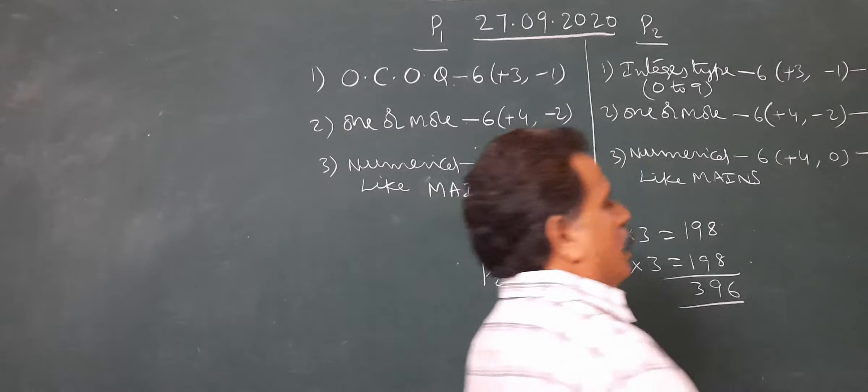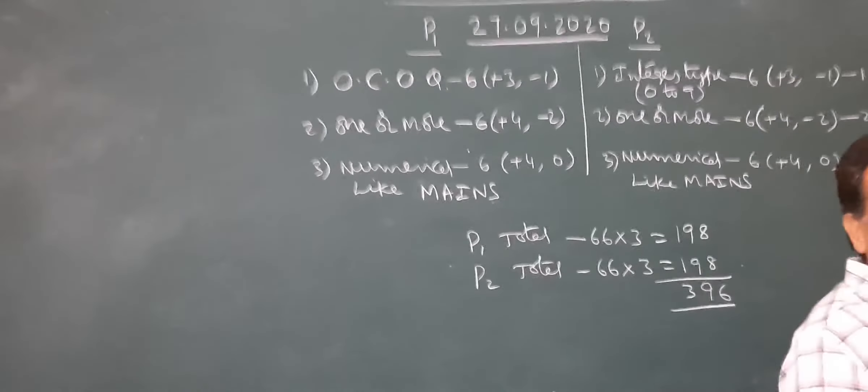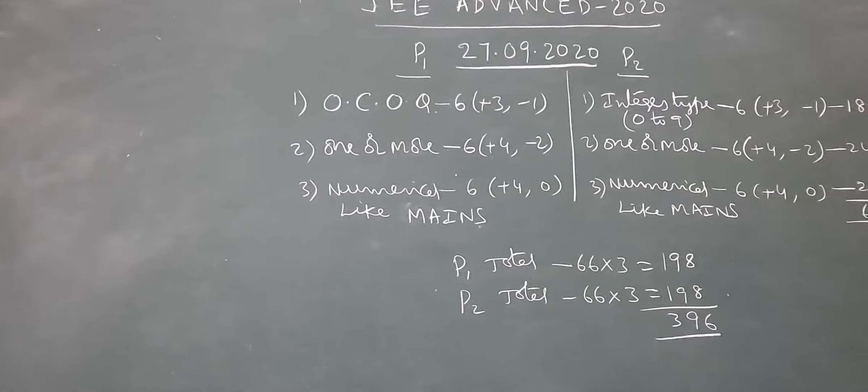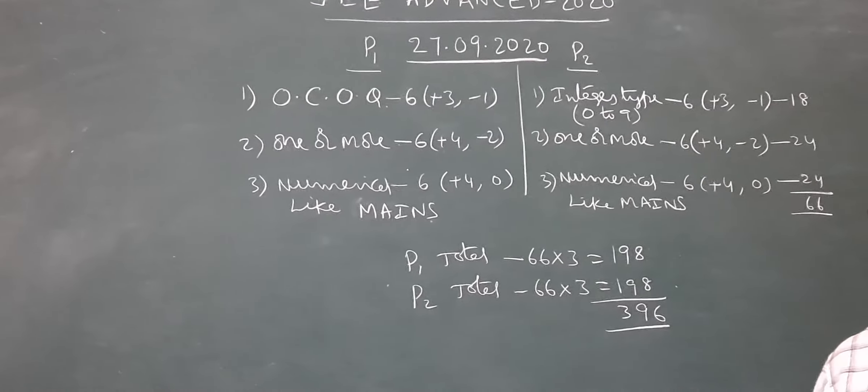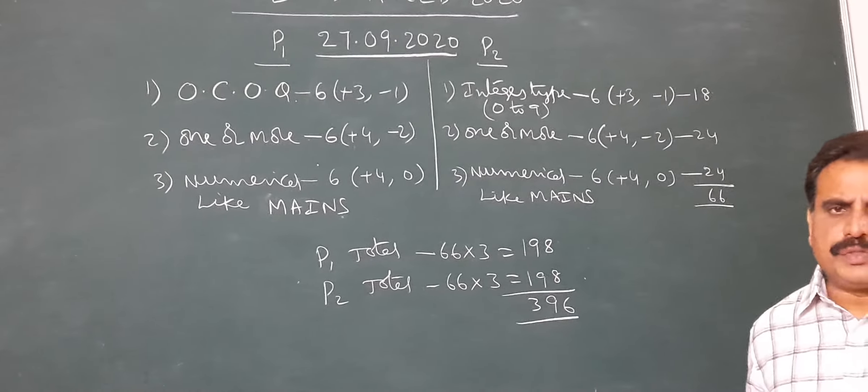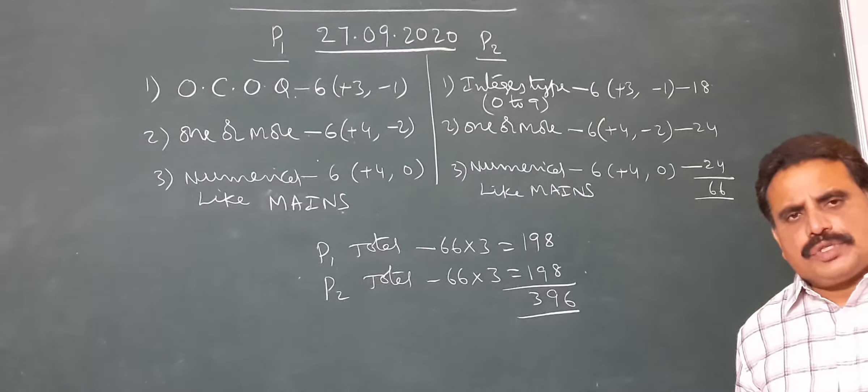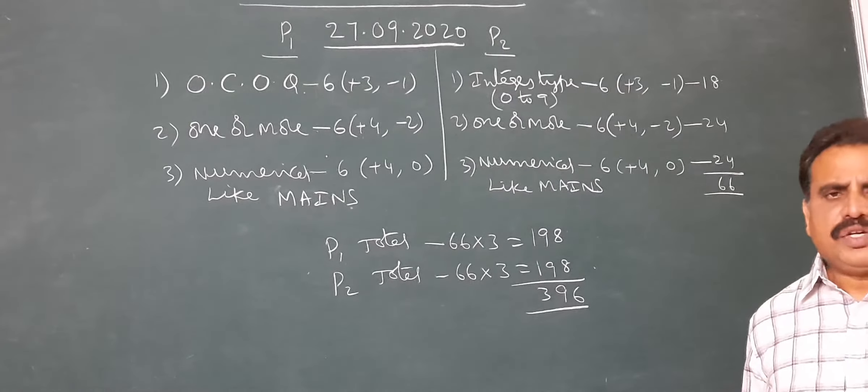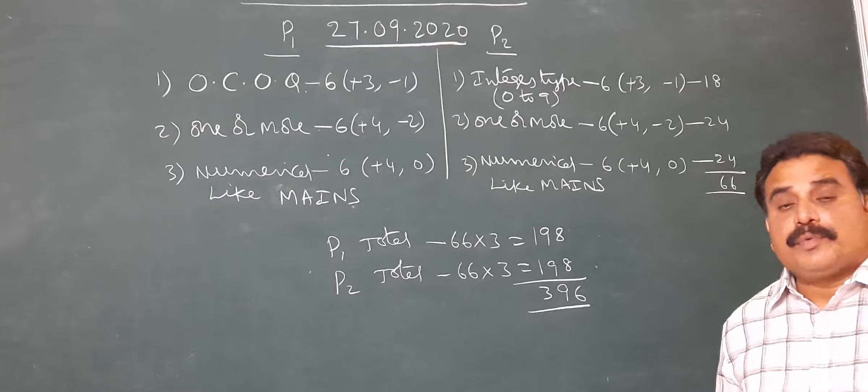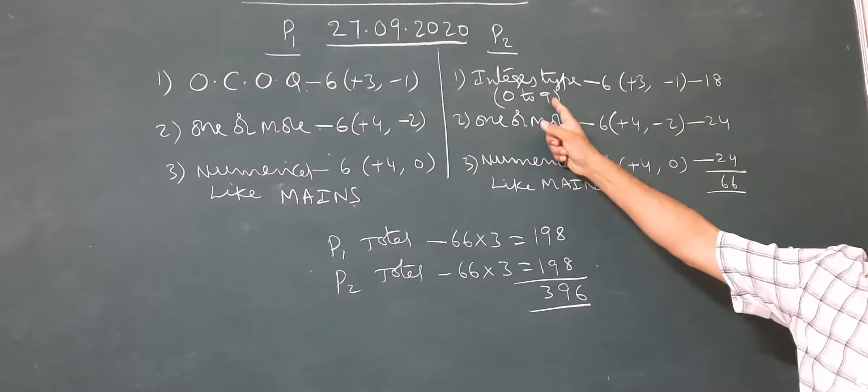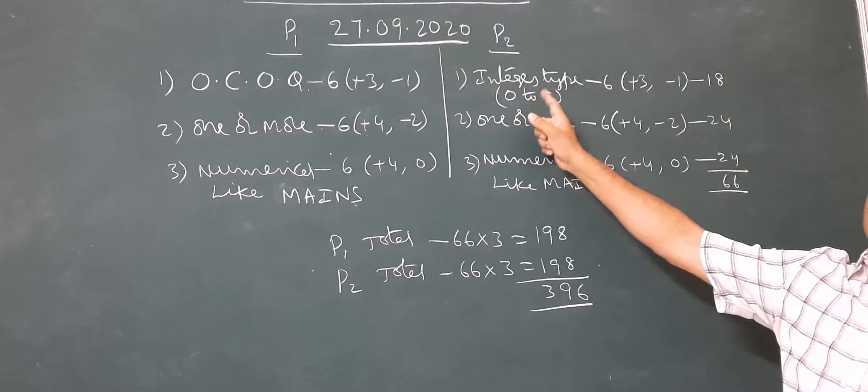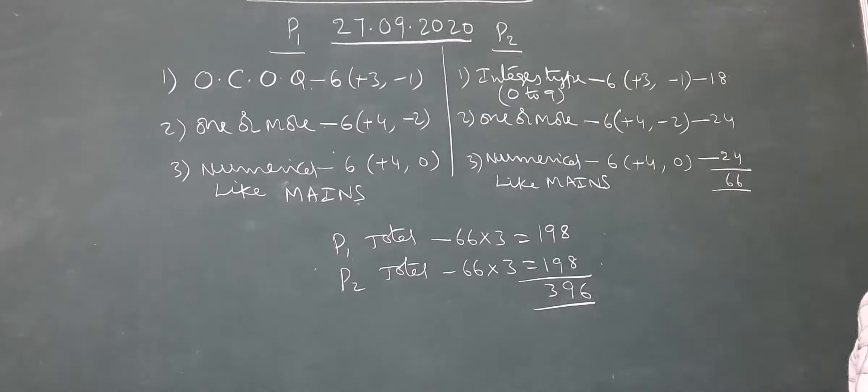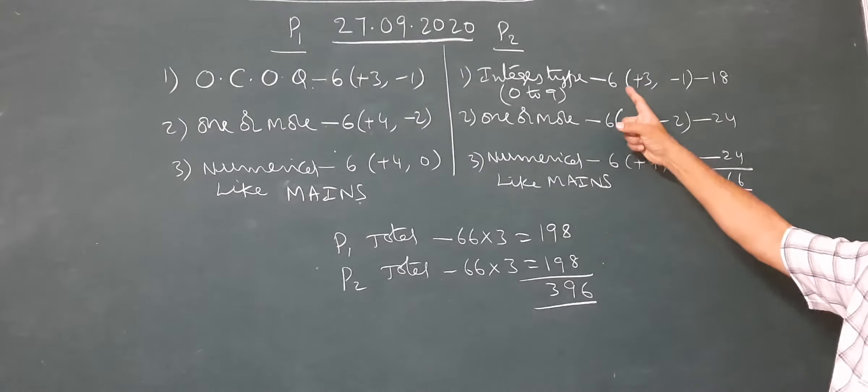We discuss paper two. Paper two also contains the same number of questions, 18 questions. It contains three sections: section one, six questions; section two, six questions; section three, six questions. Section one: integer type questions, that means zero to nine, single digit integer type questions.